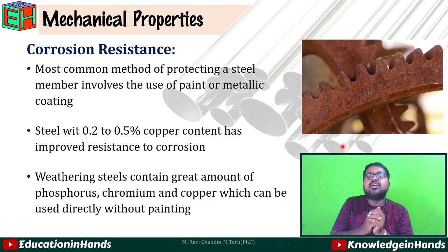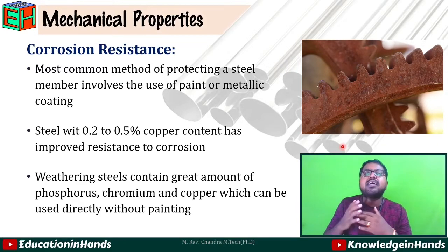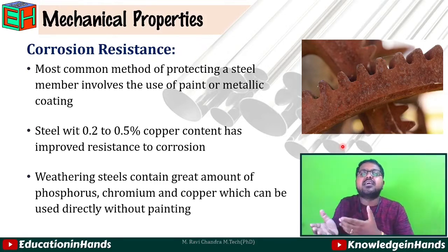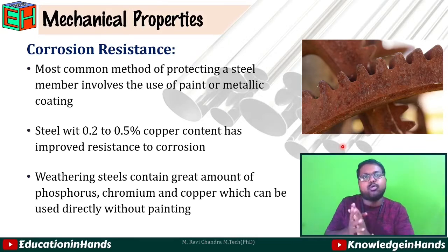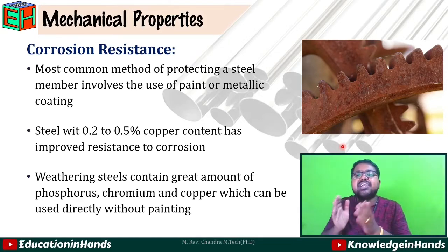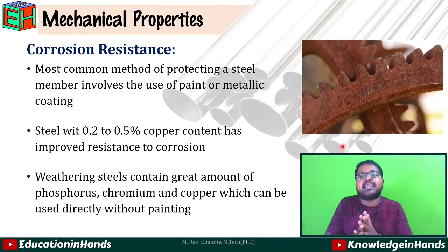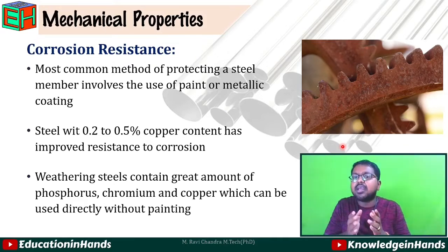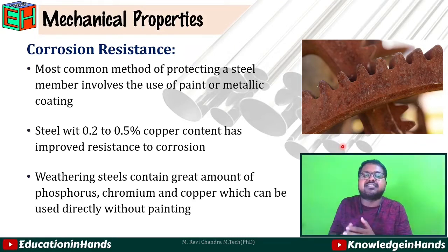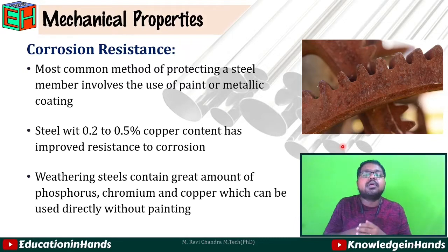Next is corrosion resistance. Steel is prone to corrosion, and the main problem with steel structures is maintenance because steel is easily corroded. The most common method of protecting a steel member involves the use of paint or metallic coating. If steel is prepared with 0.2 to 0.5% copper content, it will improve its resistance to corrosion. Weathering steels contain greater amounts of phosphorus, chromium, and copper and can be used directly without painting, serving as corrosion-resistant steels.